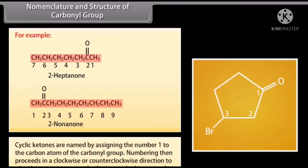Cyclic ketones are named by assigning the number 1 to the carbon atom of the carbonyl group. Numbering then proceeds in a clockwise or counterclockwise direction to give the next encountered substituent the lower number.